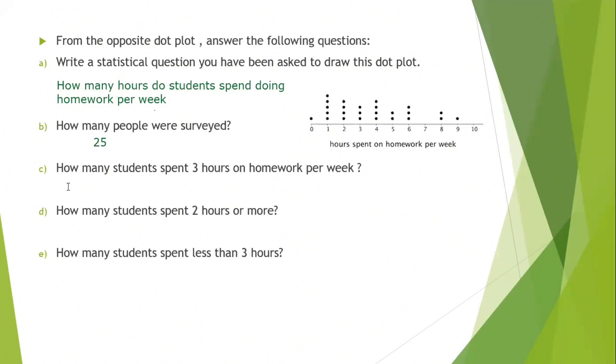C, how many students spent three hours on homework per week? Those who spent three hours are three students. D, how many students spent two hours or more? Two hours or more. Since it says two hours, I count with me two hours. Either I count all of these, or I say 25 minus those who are less than two. If I count them, they will be 19 students.